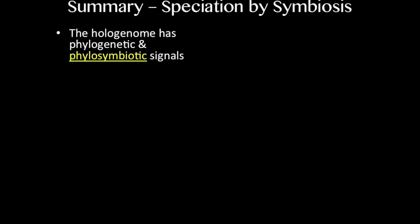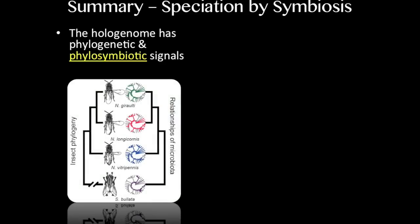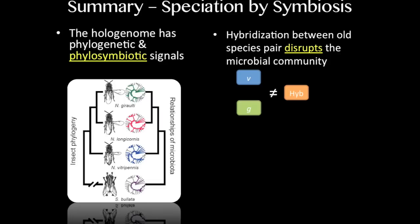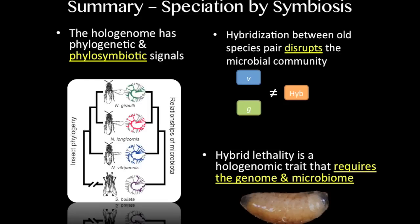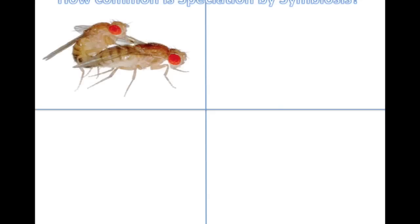Let me summarize. In our work in Nasonia, the hologenome looks like it has both a phylogenetic and a phylosymbiotic basis, as evident through these two sets of trees. Hybridization between the old species pair, where we only see mortality, results in dysbiosis where the hybrids don't have a microbial community like that of their parents. Finally, the lethality appears to have a hologenomic basis, requiring both the genome and the microbiome to get full mortality. So how common is this? Is this just a Nasonia thing, or might it be more common?